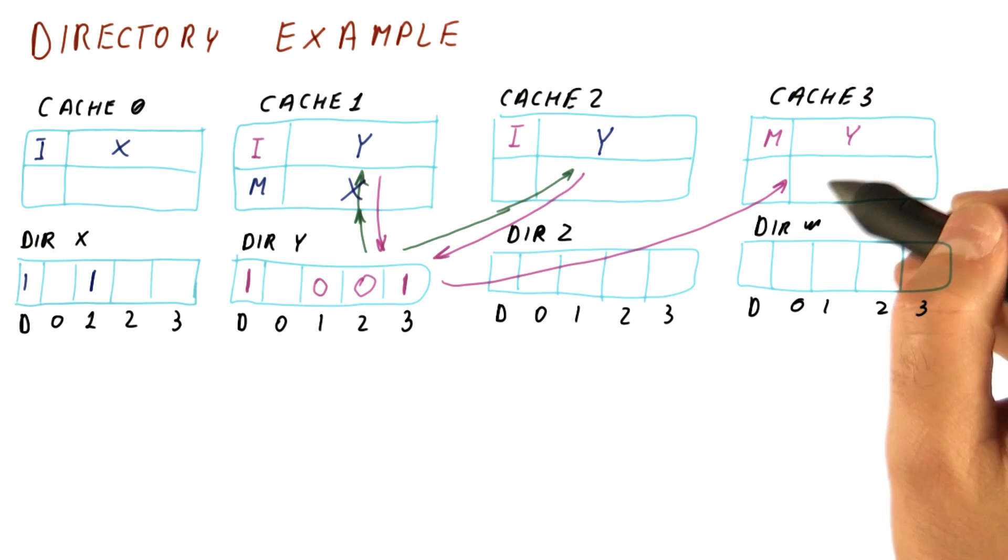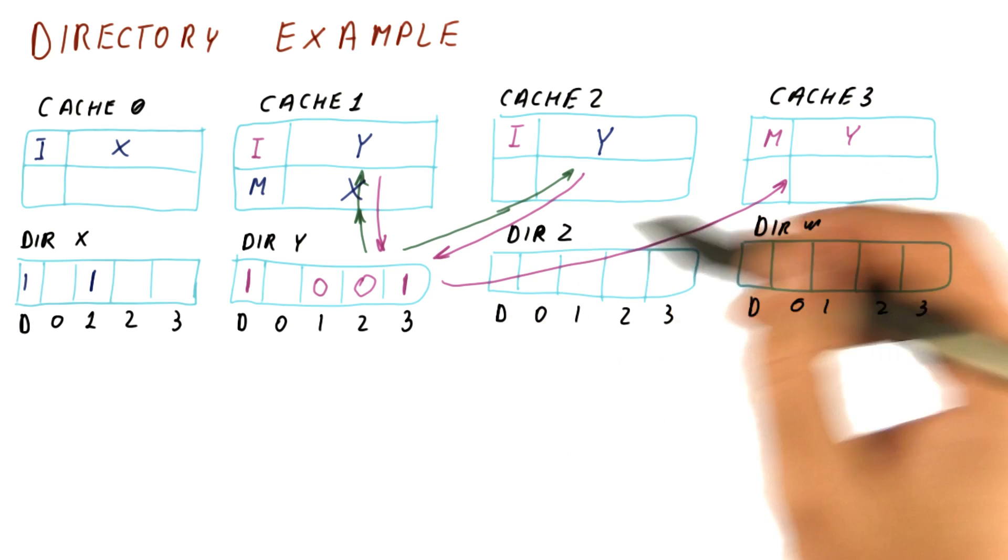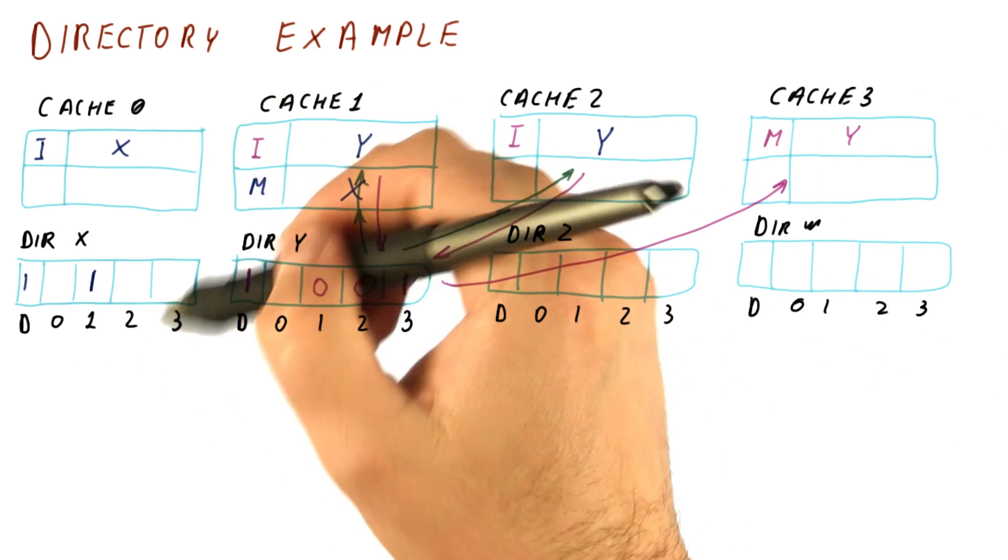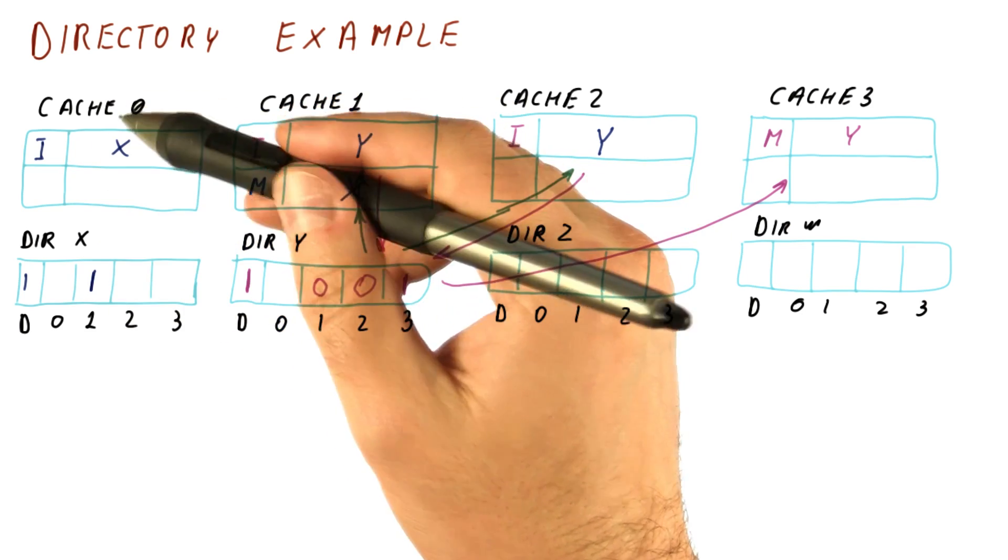So again, this write only involved the caches and directory entry that actually needed to be involved for this block. This cache and directory, for example, were completely operating independently of this, and these two directories could have done something else.